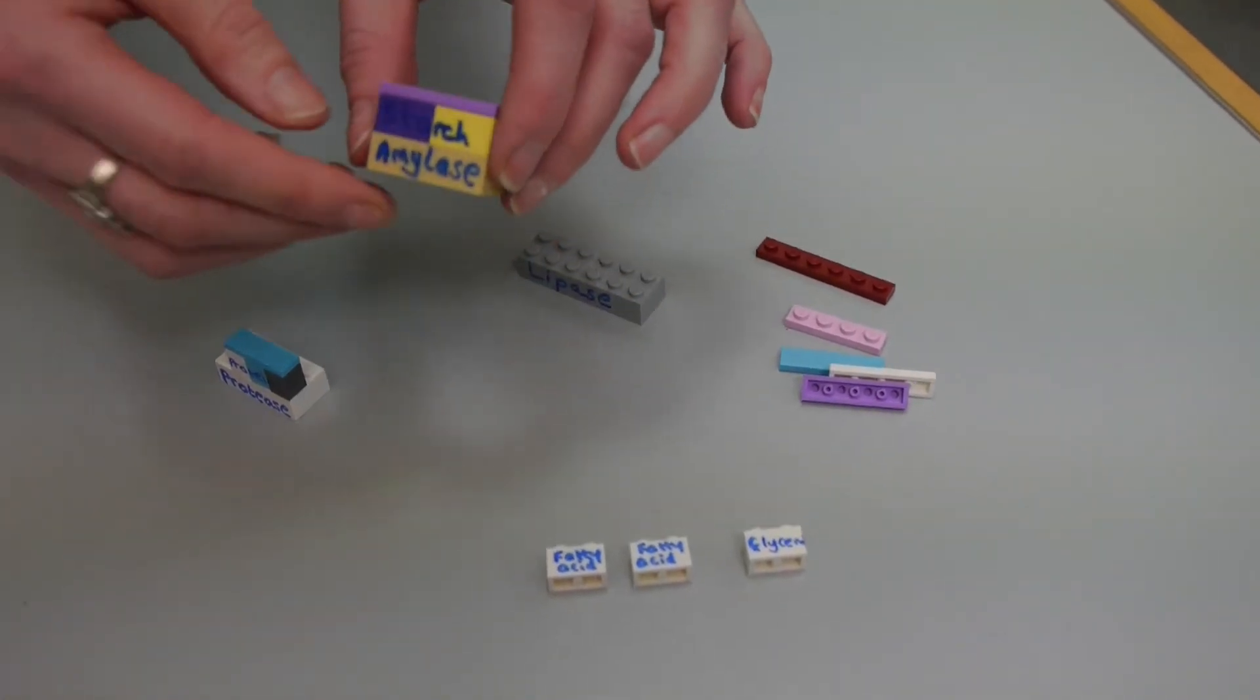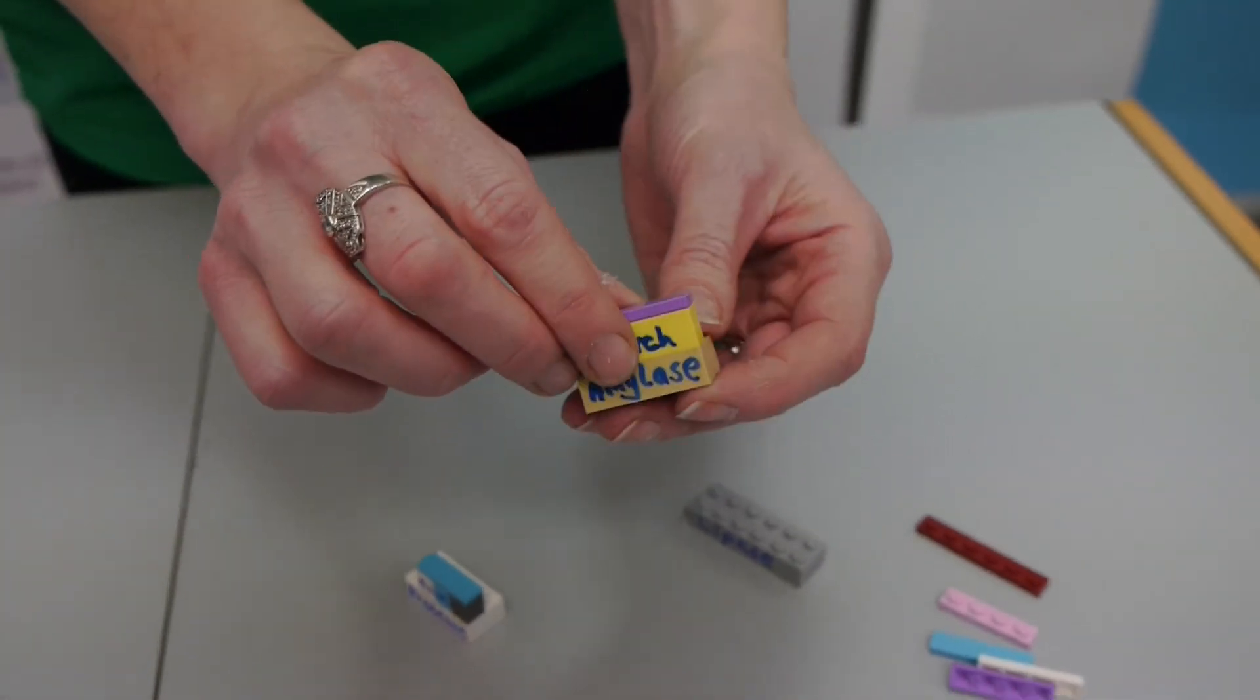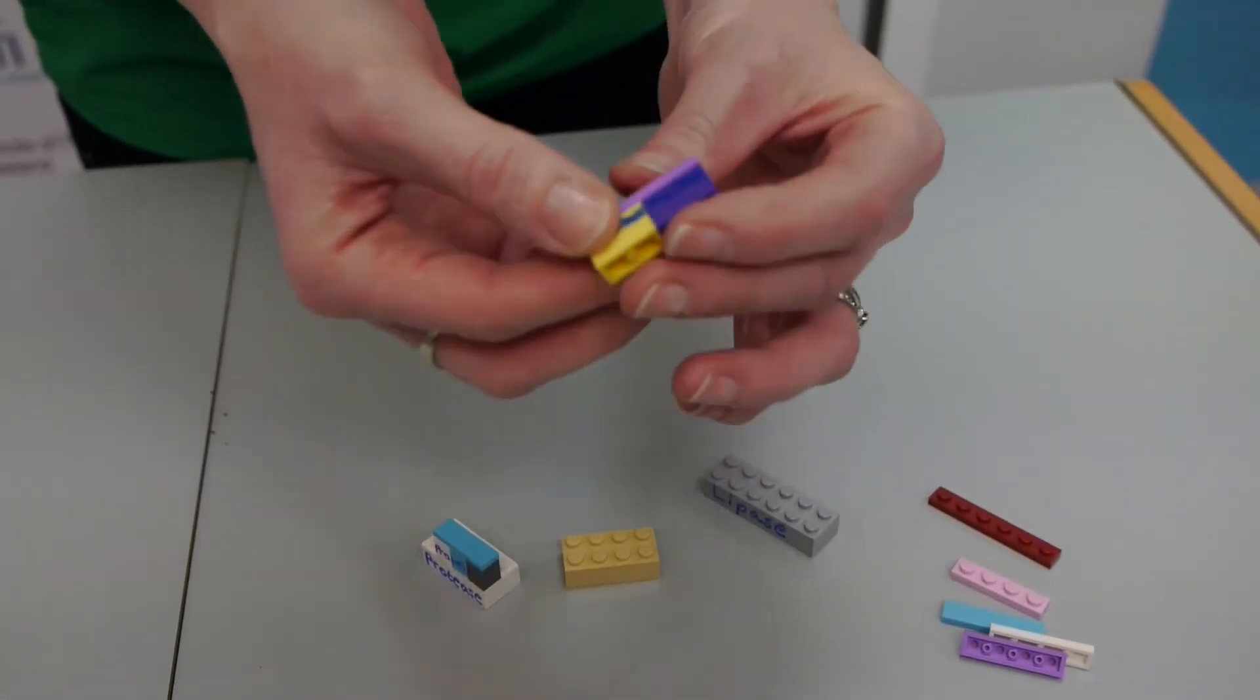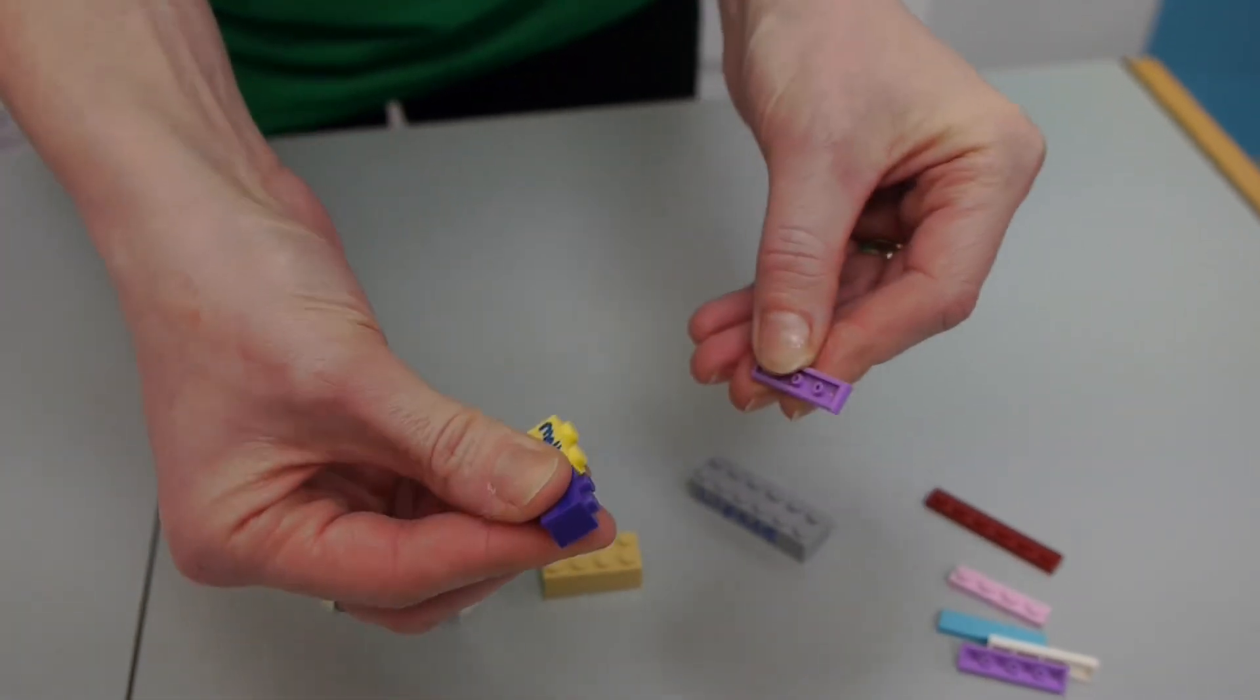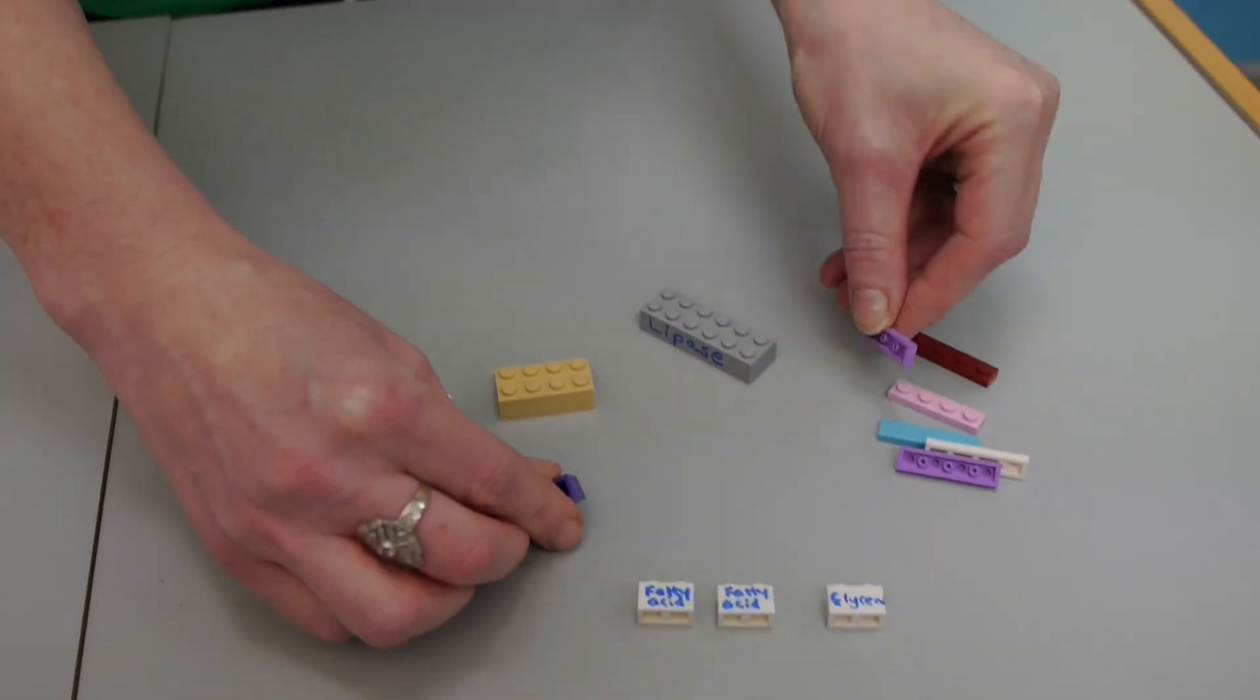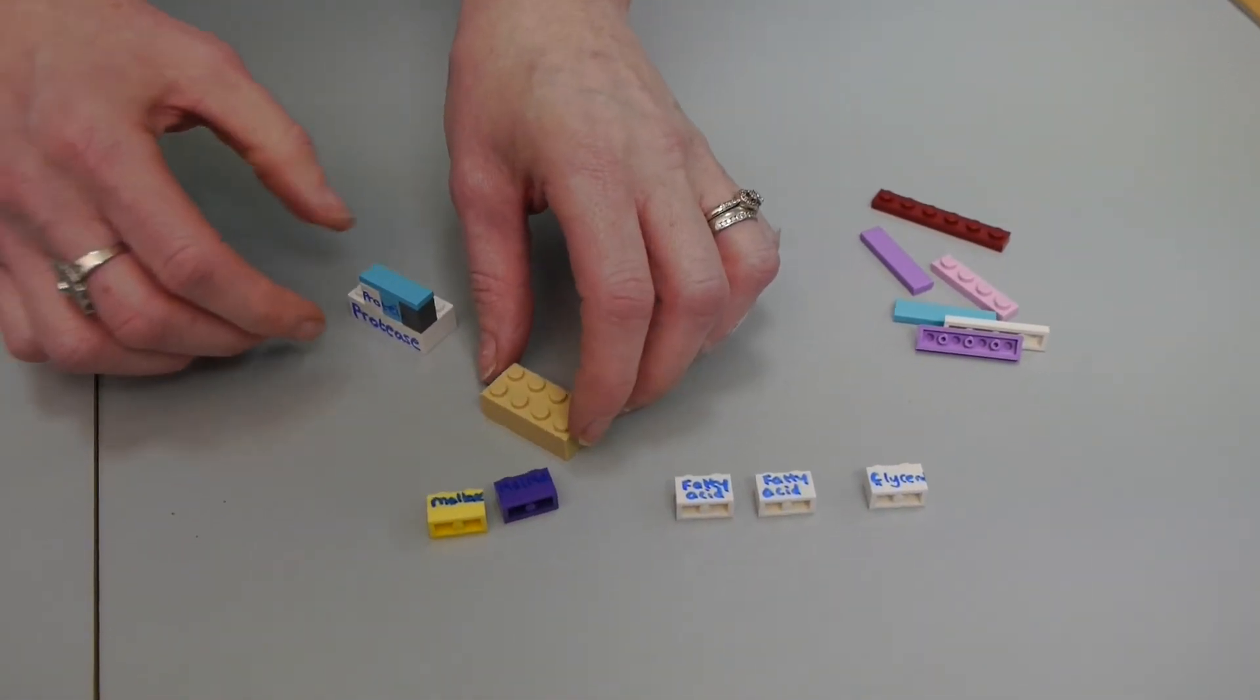I've done the same here with amylase and starch. When amylase breaks down starch we get a disaccharide. So on this side of the bricks for the students I've written maltose. So the students have to identify the product and the product of breaking down the starch will give me molecules of maltose.